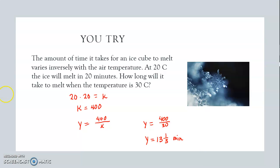Okay. This one takes 20 minutes when it's 20 degrees, so 20 times 20 would be k. k is 400, so our equation is y equals 400 divided by x. Then when the temperature is 30 degrees, we plug in 30 for x, and it takes 13 and a third minutes for the ice cube to melt.